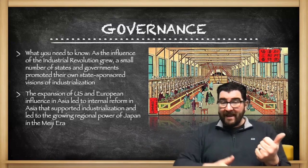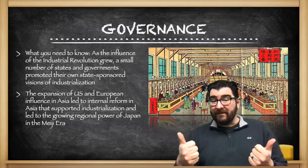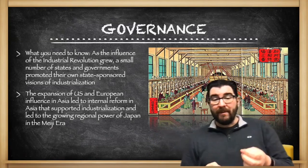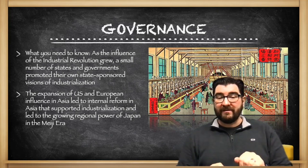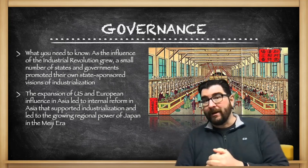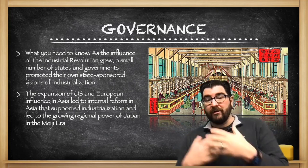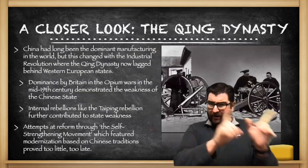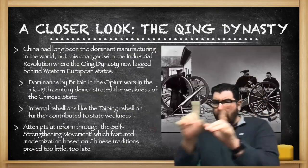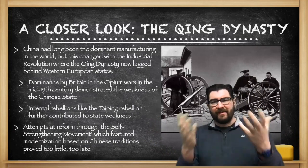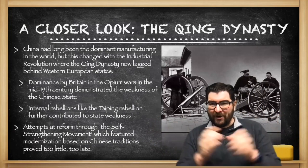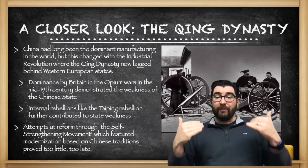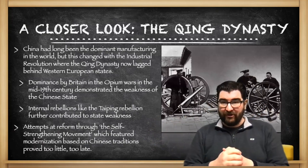The expansion of the United States and European influence in Asia is going to lead to internal reform in Asia that supports industrialization and leads to the growing regional power of Japan during what is known as the Meiji era. We're going to do a run through a number of countries that the College Board loves to ask questions about in terms of their responses to industrialization.